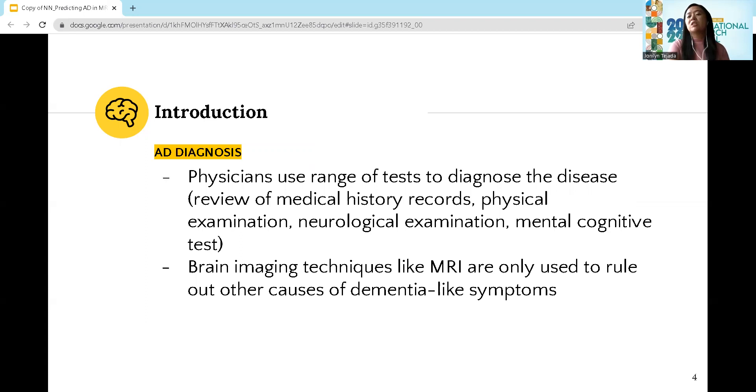Brain imaging techniques like MRI are not used to diagnose the disease, but they are used to rule out other causes of dementia-like symptoms, such as head injury, tumors, and history of stroke.